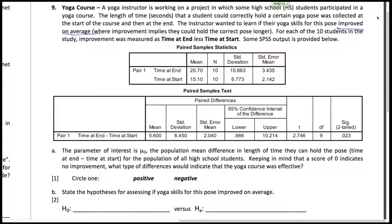So we're letting this mu D be the time at the end minus the time at start. If the score of zero is no improvement, what would the difference have to be to indicate that the course was effective? Well, you have to, your time at the end, the time you can hold the pose at the end must be greater than the time that you hold at the start. So if you subtract them, the result should be positive if there was improvement.